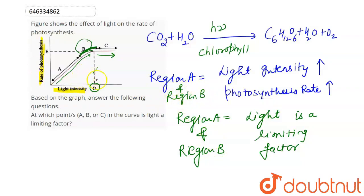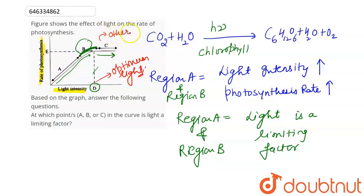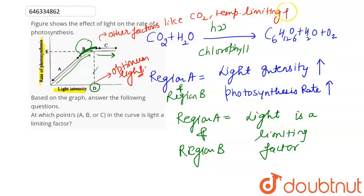At point D, we reach optimum light intensity, where the photosynthesis rate is at its maximum. At point C, light intensity is very high but photosynthesis rate has become constant. This is because at point C, other factors like CO2 and temperature become the limiting factors. So at point C, light intensity is no longer the limiting factor.